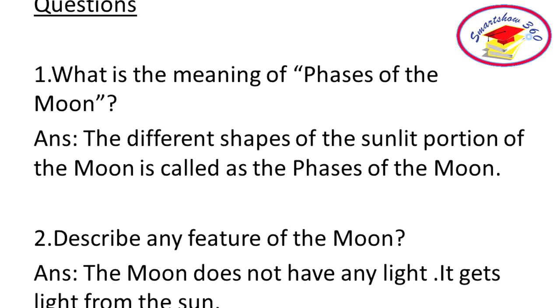Question 2. Describe any feature of the moon. Answer: The moon does not have any light of its own. It gets light from the sun.